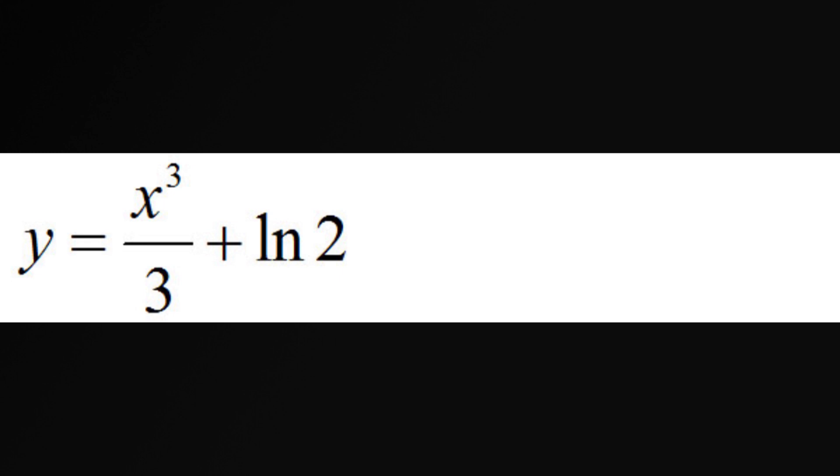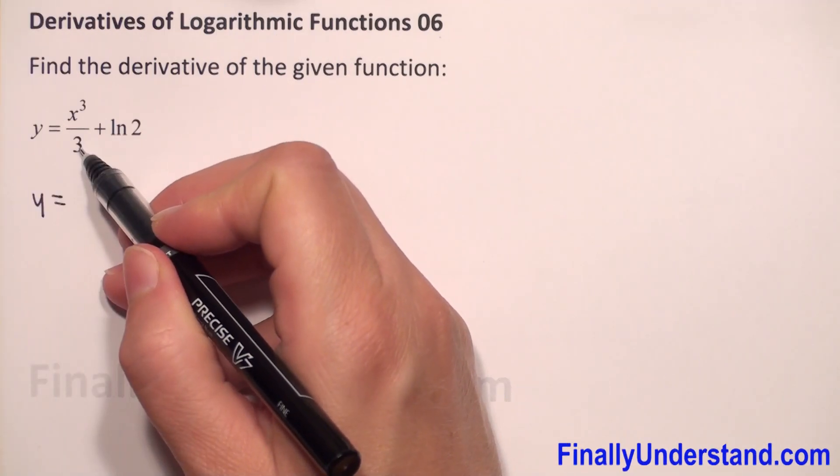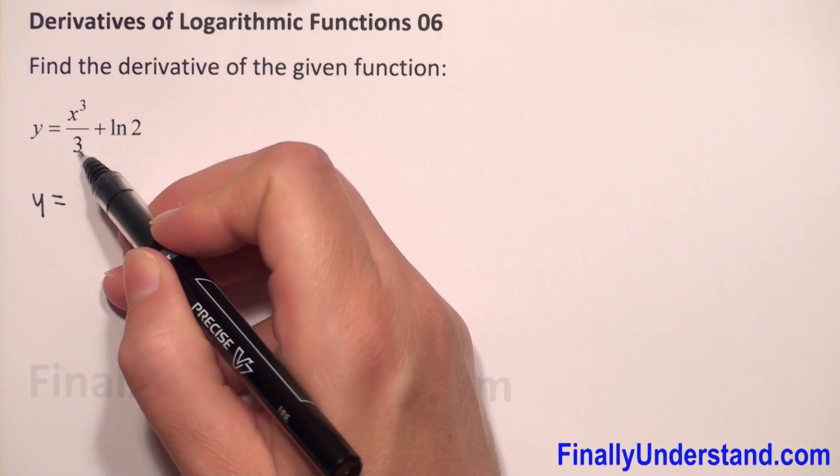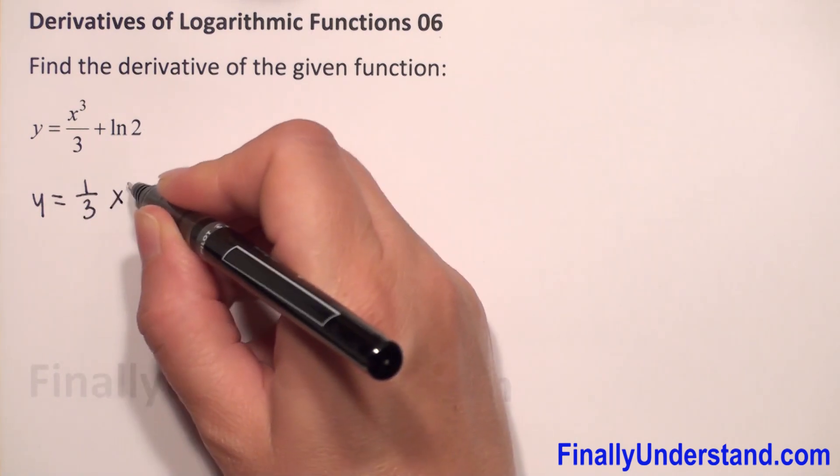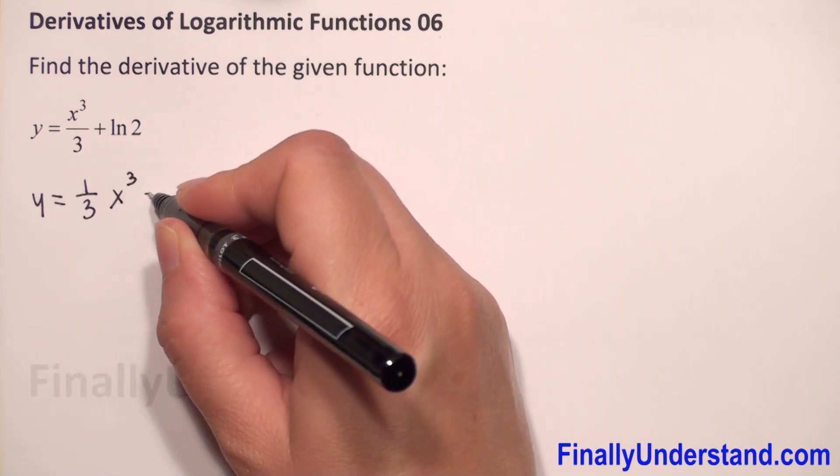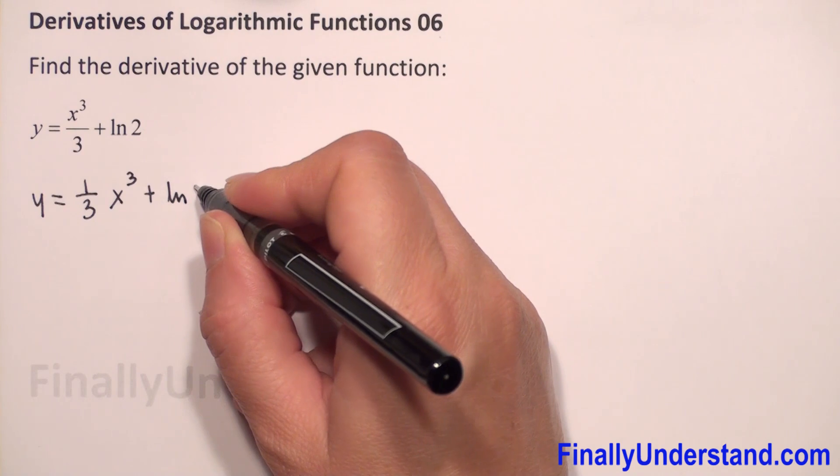First, I will rewrite our function. We have y equals, because we have a constant number in the numerator, we can write 1/3 times x to the third power plus natural log of 2.